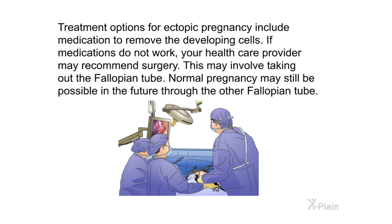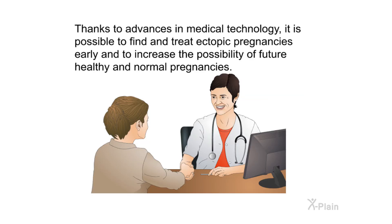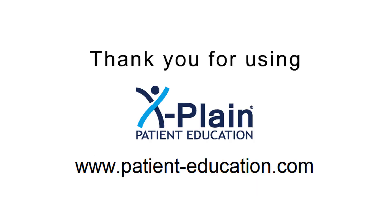Treatment options for ectopic pregnancy include medication to remove the developing cells. If medications do not work, your health care provider may recommend surgery, which may involve removing the fallopian tube, though normal pregnancy may still be possible through the other tube. Surgery may be done through small incisions (laparoscopic surgery), or a larger incision may be needed if the tube has burst or significant blood loss is a concern. Thanks to advances in medical technology, it is possible to find and treat ectopic pregnancies early and to increase the possibility of future healthy and normal pregnancies.